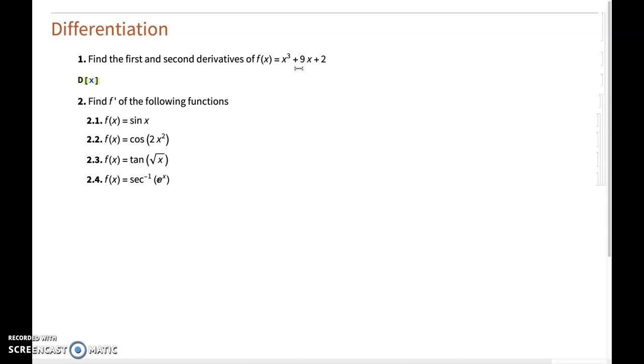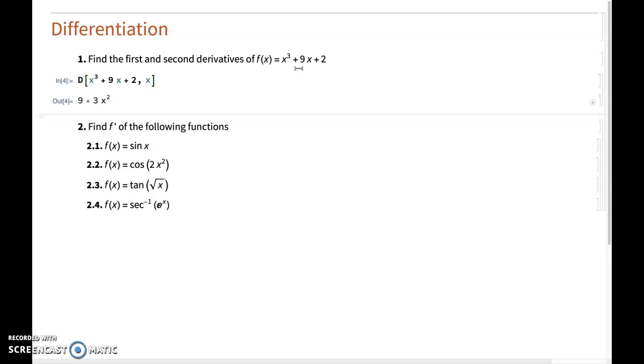And then you start typing in your function. So this is x cubed plus 9x plus 2. And then you need to tell Mathematica that the variable you're interested in differentiating with respect to is x. And then you run the command and get 9 plus 3x squared, which is what is expected.